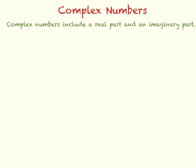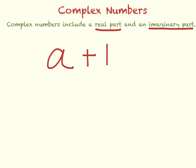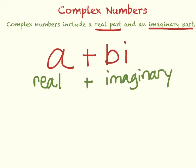So that was imaginary numbers. Now we're going to talk about complex numbers. Complex numbers include a real part and an imaginary part, and they are written in the form a plus bi, where a is the real part and bi is the imaginary part. Also please keep in mind that the real part always comes first — that's important.